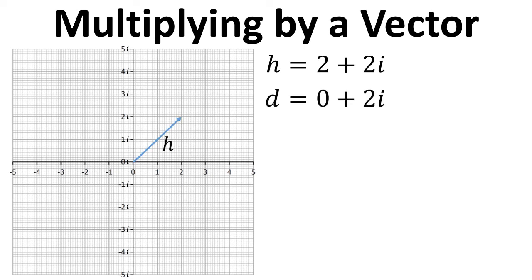And we're going to multiply this by vector d, which is 0 plus 2i. So the real part here is 0, and we've just got 2i for the imaginary part.